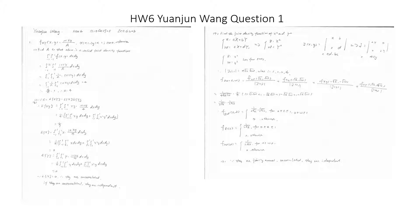Because E[X] equals zero, E[Y] equals zero, and E[XY] equals zero, the covariance equals zero, so X and Y are uncorrelated. Because they are uncorrelated, they are also independent.